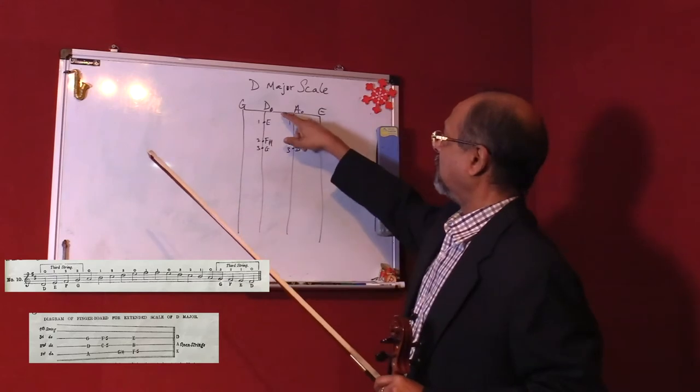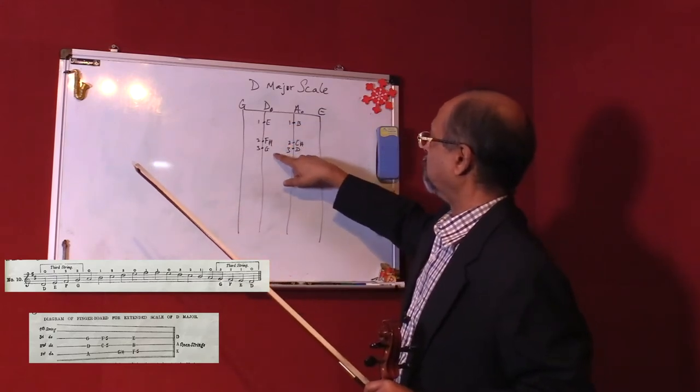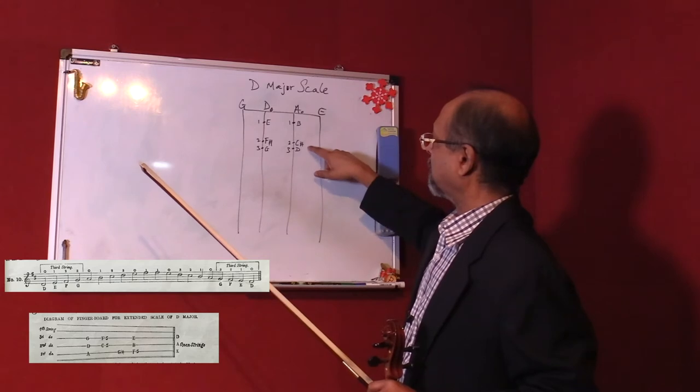So we start with the D. The first note would be the D, E, F sharp, G, A, B, C sharp, and D.